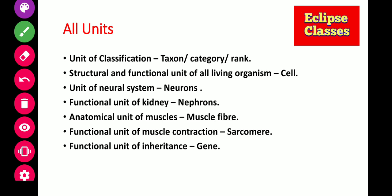The first is your unit of classification — taxon, category and rank. We have seen it in the first chapter, The Living World. The second is your most important and easy one: the structural and functional unit of all living organisms is cell.